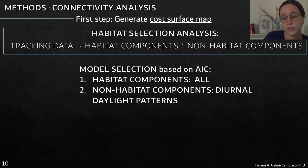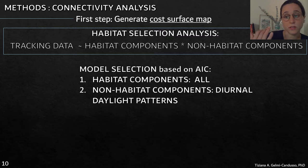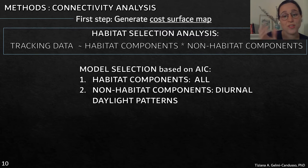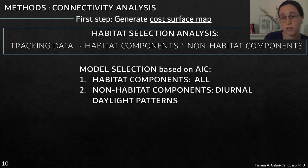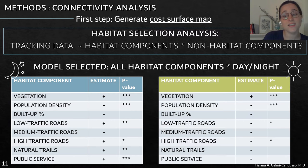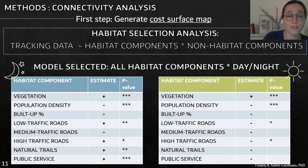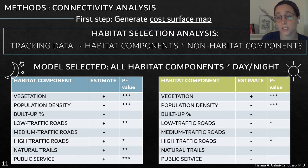After that, we selected our model. First, we ran all the habitat components and selected the best ones — in our case, it was the model with all habitat components included. Then we added the non-habitat components to see which was the strongest in explaining our variation. In the end, day versus night was the strongest model. We can see how during the night, vegetation and linear features are selected, while during the day only vegetation is selected, and the rest are less selected than during the night.